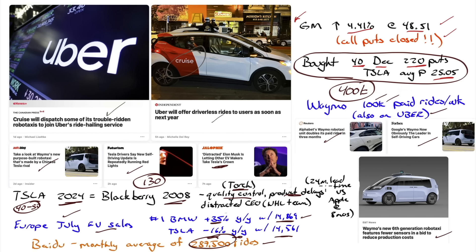Product delays — RIM had a 24-month lead time on any new product, while Apple was turning over the iPhone about every eight months. They didn't speed up. You also had a distracted CEO at the time who was very concerned about buying an NHL team for Hamilton, and it distracted him from the business. You sort of have that going on clearly with Musk and X right now, and his fascination with Trump and wanting to be something in Trump's cabinet or do something in the administration.